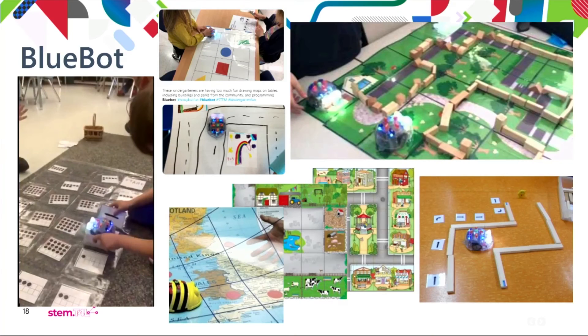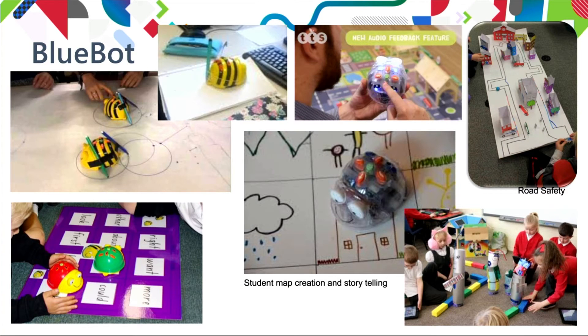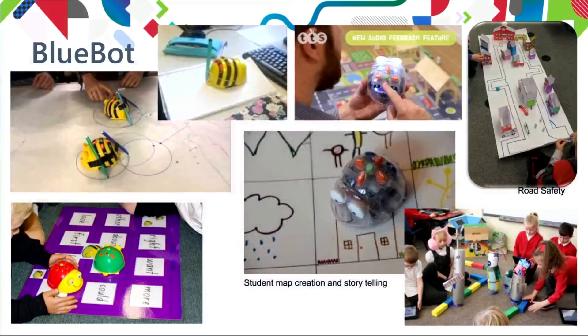An interesting idea on the next page is to attach a pen or pencil to the BlueBot to see what shapes it might make with the algorithms they've built. If they make a square algorithm for the BlueBot and attach a pen or pencil, it actually creates a circle — a really good discussion opportunity between yourself and the students to talk about positions and shapes. It also builds artwork that the students can say they programmed a robot to create. What a great opportunity that is.